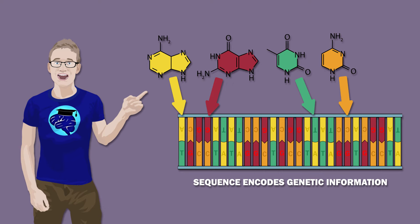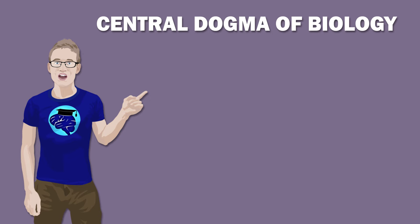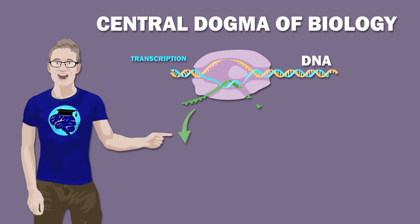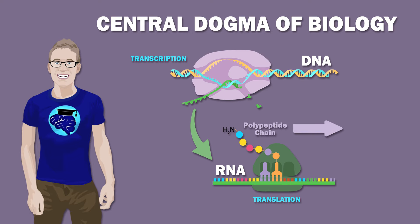The sequence of these four bases is the means by which DNA encodes genetic information, which can then be used to carry out all the cell's functions. The central dogma of biology describes how this genetic information is accessed and used by the cell. DNA is transcribed into RNA, which is then translated into proteins.